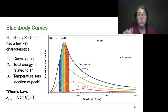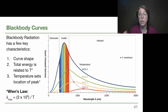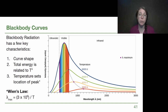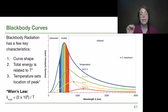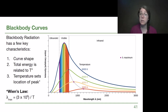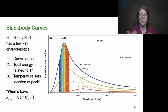Much more important to our curriculum goals is this idea — definitely worth putting in our notes — that the temperature of a star will determine the peak wavelength, and will determine if the star looks red, yellow, or blue. That determination is based on a fairly simple-looking equation called Wien's law, which has two variables and a simple number that compares them.